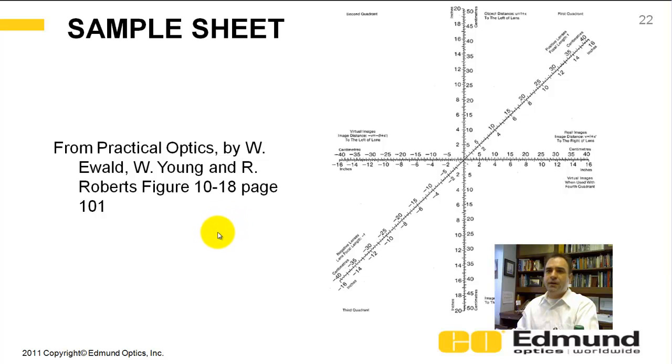There's a good reference here, a book called Practical Optics. It's got, it shows this nomograph, object, image, focal length.